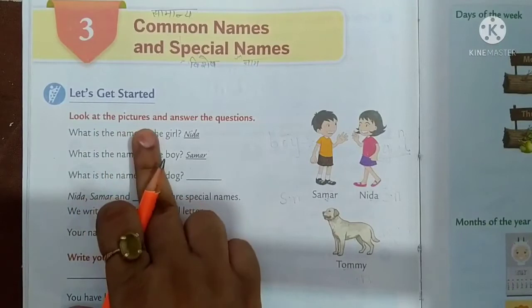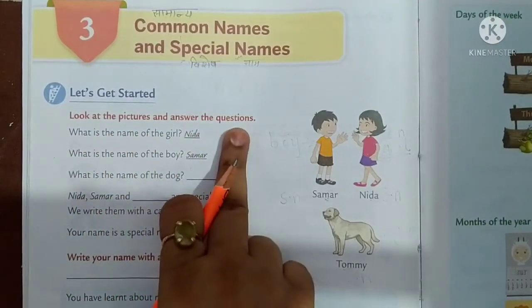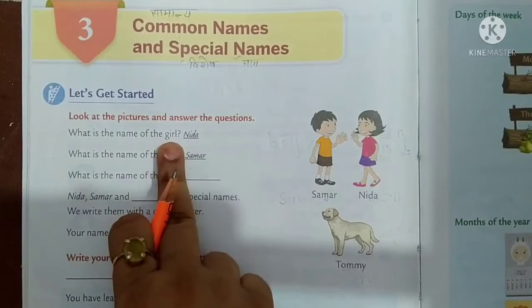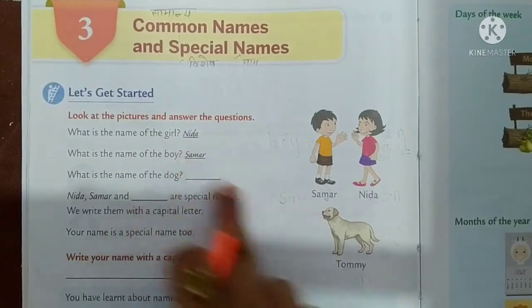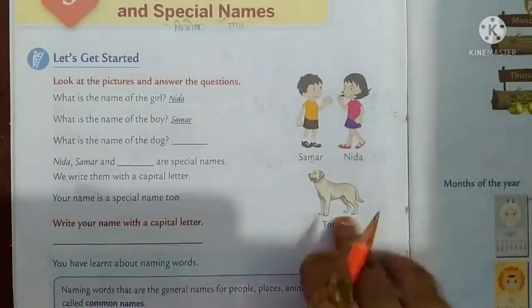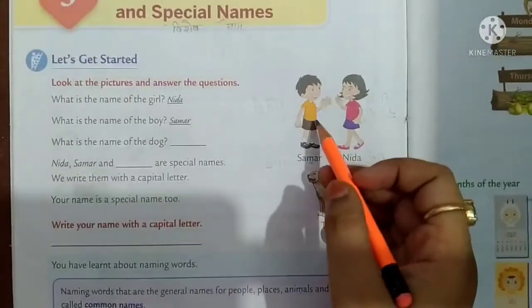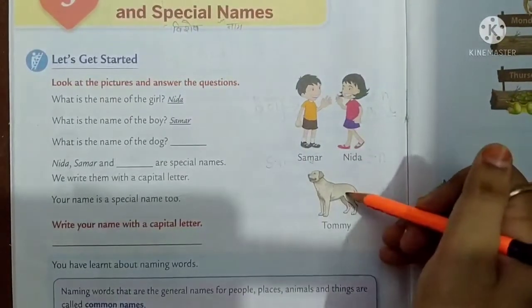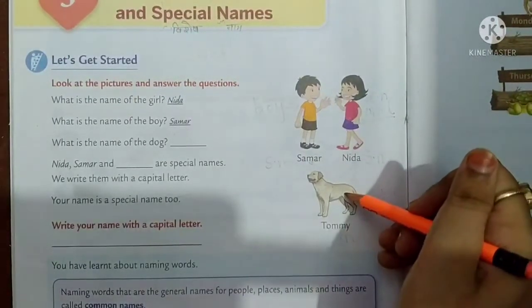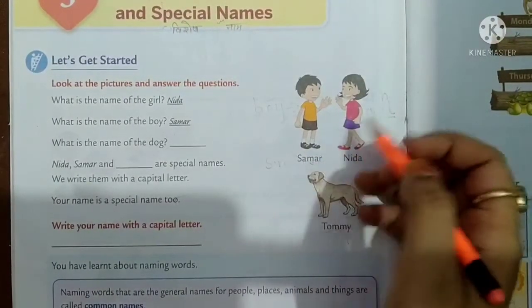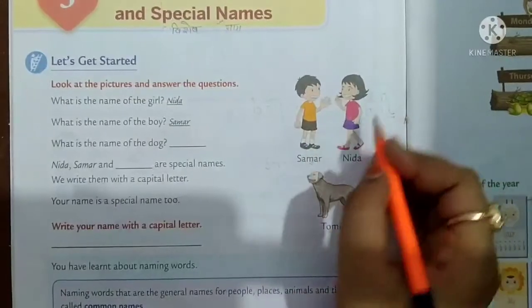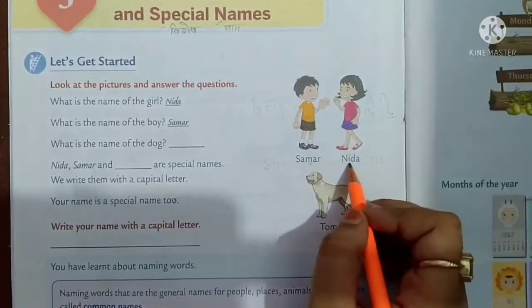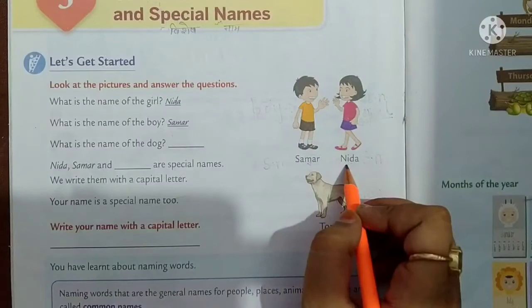Look at the pictures and answer the questions. What is the name of the girl? Look at this picture. This is a boy, girl and animal. What is the name of the girl? Nida. This is Nida.